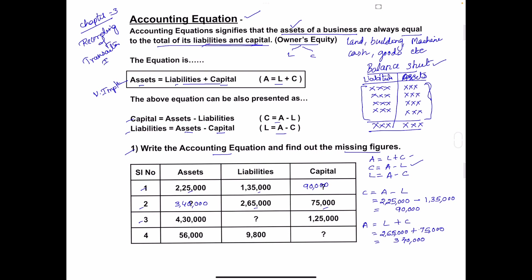In the third example, assets and capital are given and we have to find out the liability. So we take the third equation: L = A − C. Assets are 4,30,000 minus capital of 1,25,000, giving liabilities of 3,05,000.